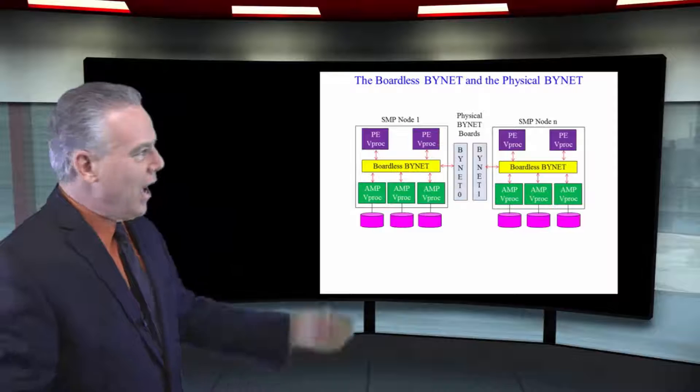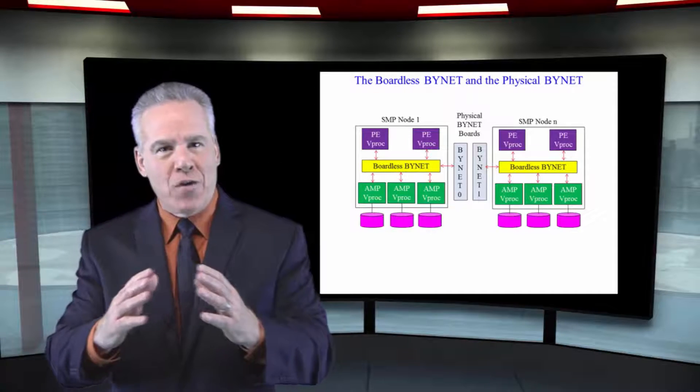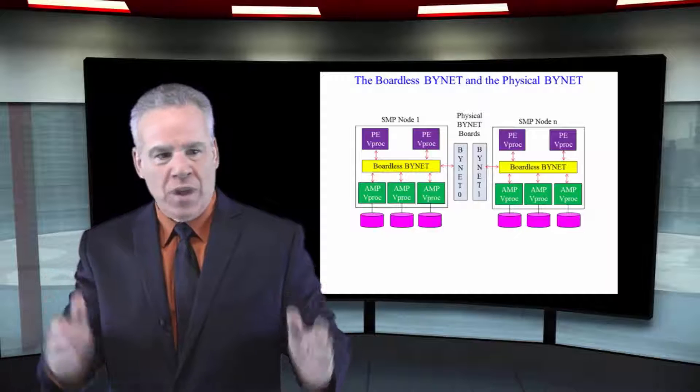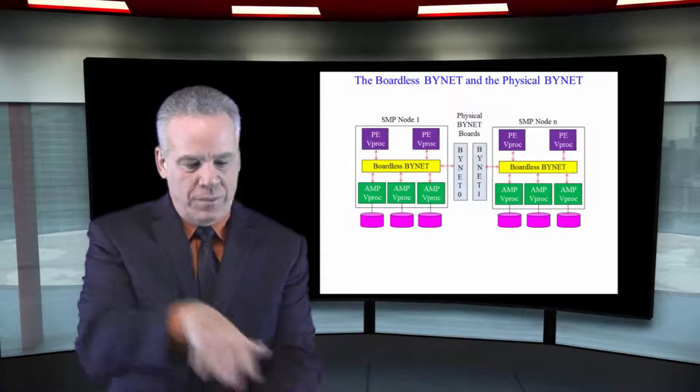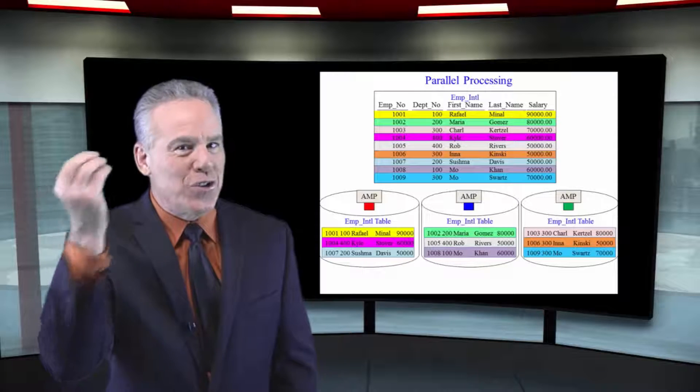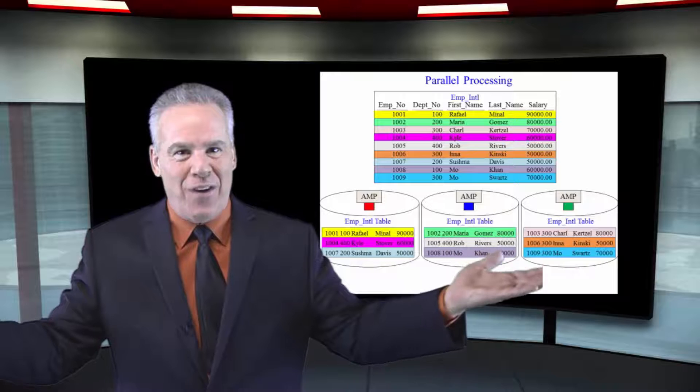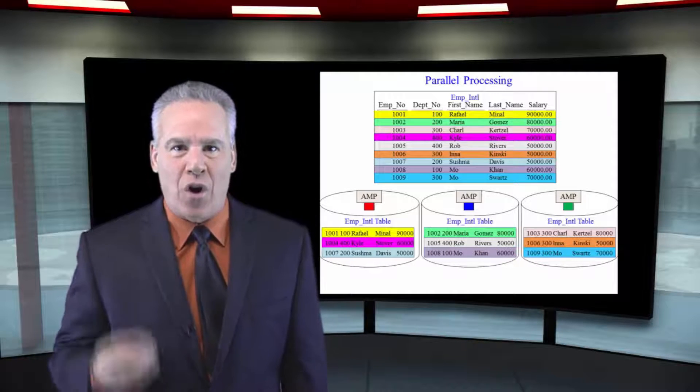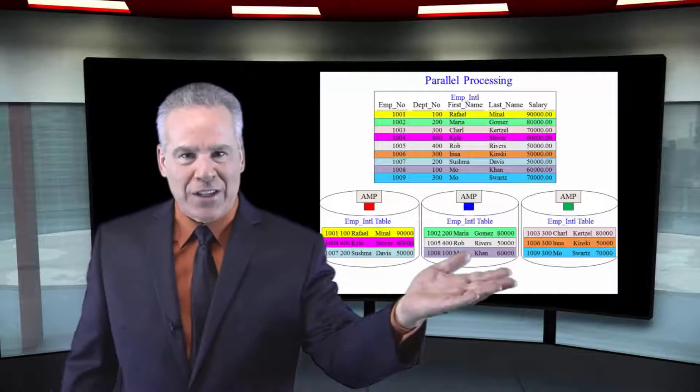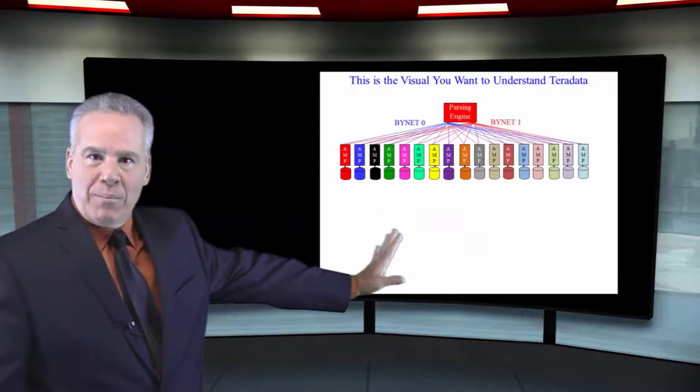Now, understand that the reason that this happens is because whenever data is laid out on a table, rows from the table are across every amp. So if we're doing a full table scan, every amp is always involved. And that's why this architecture is massively parallel. And that's why each parsing engine controls every amp.